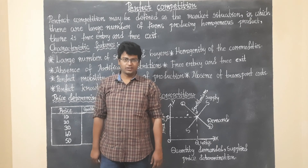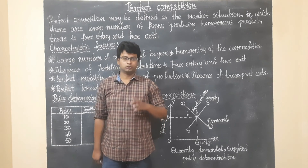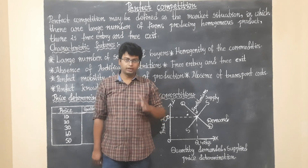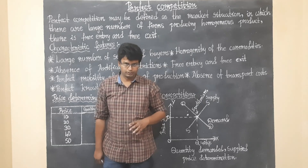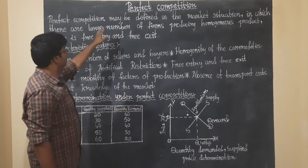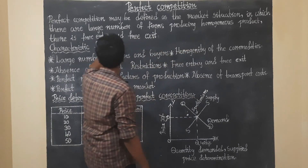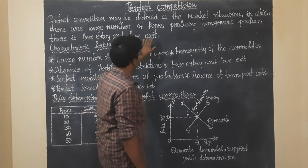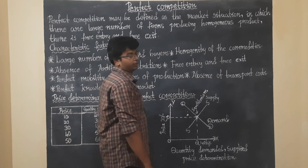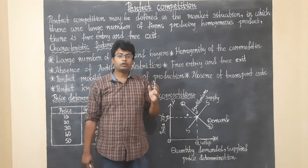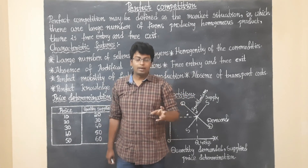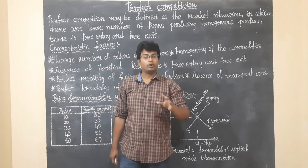Hi students, this is Sunil. Here we are going to look at perfect competition and price determination under perfect competition. Coming to perfect competition, it may be defined as a market situation in which there are a large number of firms producing a homogeneous product. There is free entry and free exit.